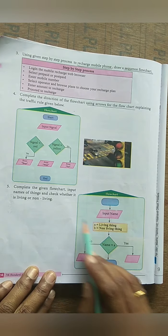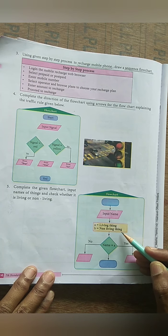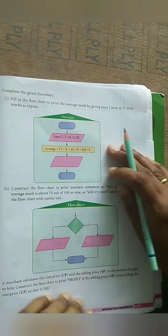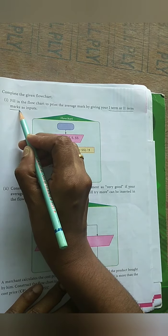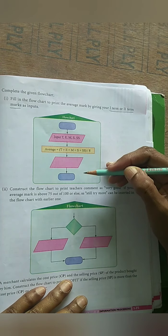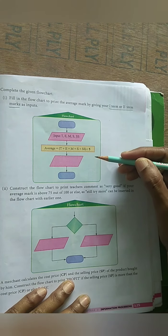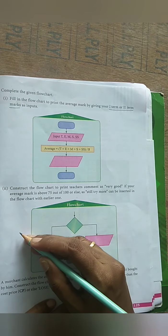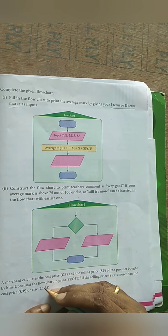Coming to the fifth problem - they are checking whether the given name is a living thing or a non-living thing. You kindly fill that in. Now coming to the sixth problem - they have given term 1 and term 2 marks with conditions, and asked you to complete the flowchart. The second subdivision of the sixth problem I will do for you - the last problem in this exercise I will do for you.